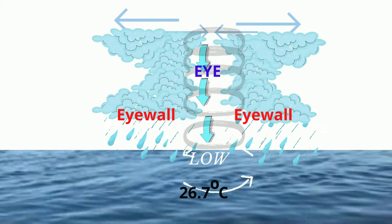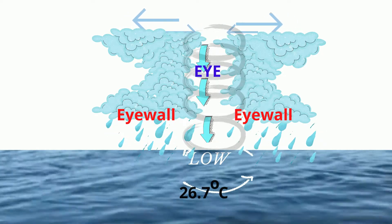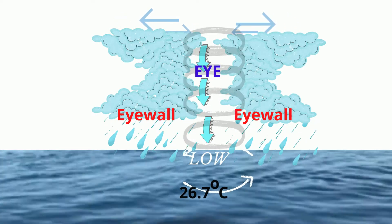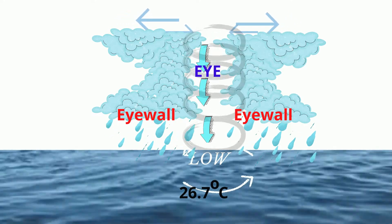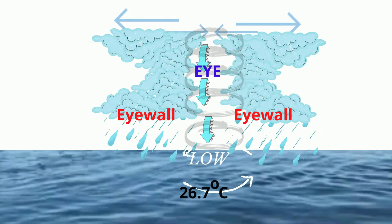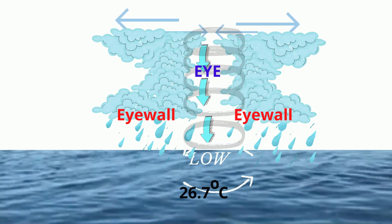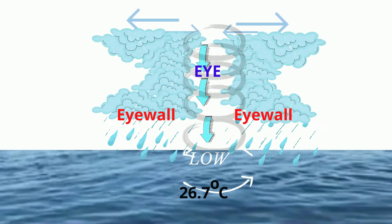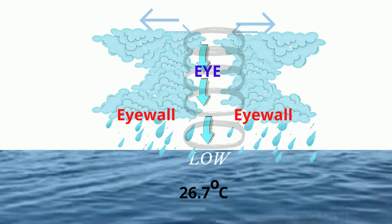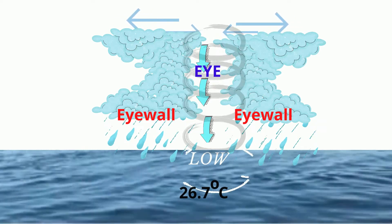As long as wind shear is low and the system continues to develop, it may eventually reach the stage where maximum surface winds are 74 miles per hour or more. The winds blowing towards the low pressure center are so strong that they are unable to get to the center and will therefore spiral upwards to form the clouds of the eye wall. Some air will drop down the middle to form the cloud-free eye, or calm.